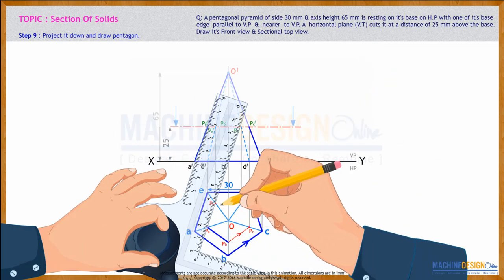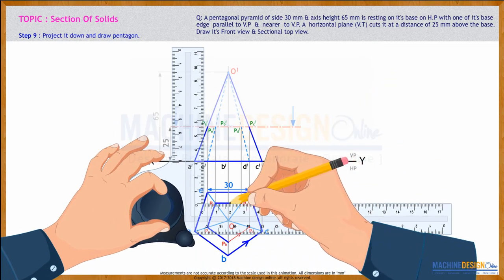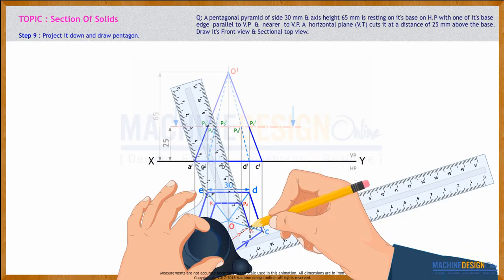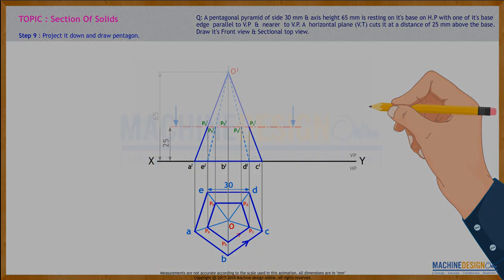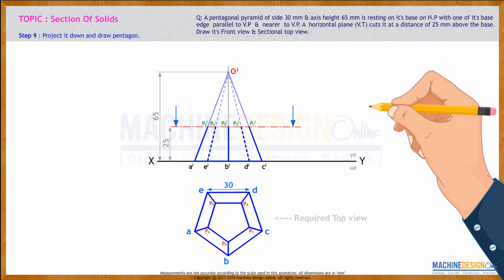Then join these points. This is the required sectional top view. This will be hatched. We are done with the front view and sectional top view.